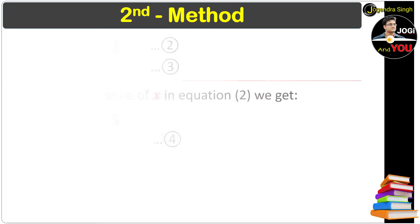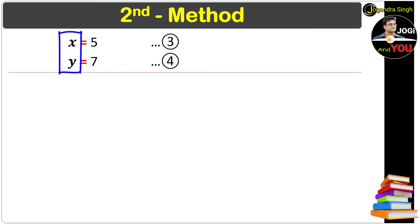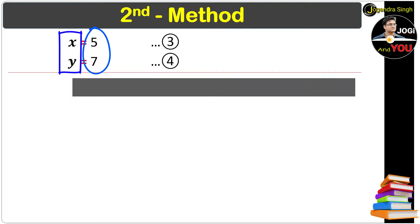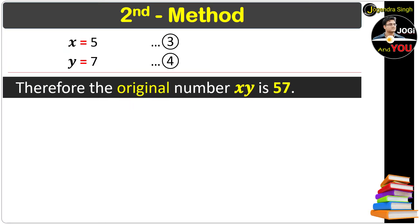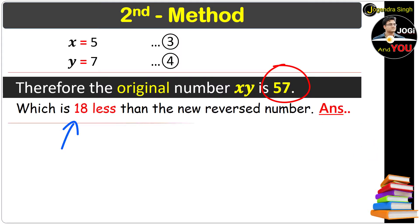Now it's all clear. We have a number xy and just got the value of x and y both. Therefore the original number xy is 57, and this number is 18 less than the new reverse number.